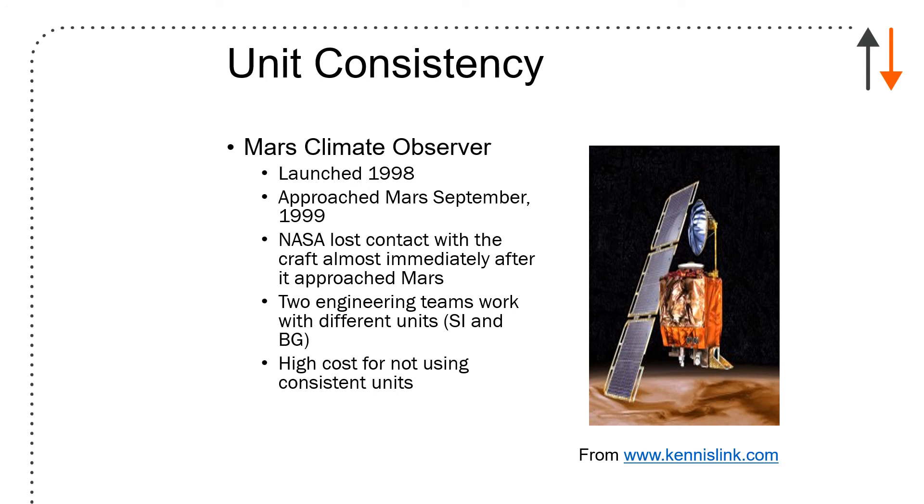And the last point is that unit consistency is something that when you're dealing with very, very talented people, say, for example, at NASA, they launched something called the Mars Climate Observer in 1998. It approached Mars in September 1999, before many of you were born, and NASA lost contact with the craft almost immediately. And, of course, you can imagine a lot of people back here were sort of saying, well, the little green men had finally blown up one of our probes. And what really happened was that there had been two engineering teams working with different units, SI and British Gravitational, and so when they translated everything, they forgot to sort of make sure that they were using meters and feet consistently and to properly communicate. And that was a high cost for not using consistent units.